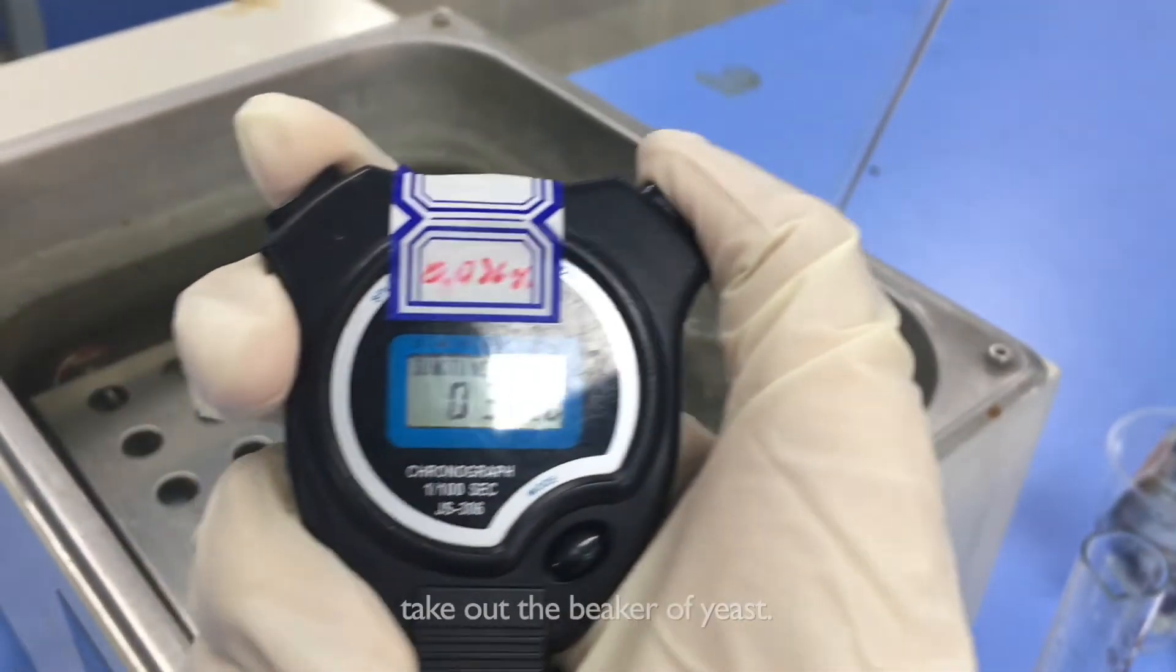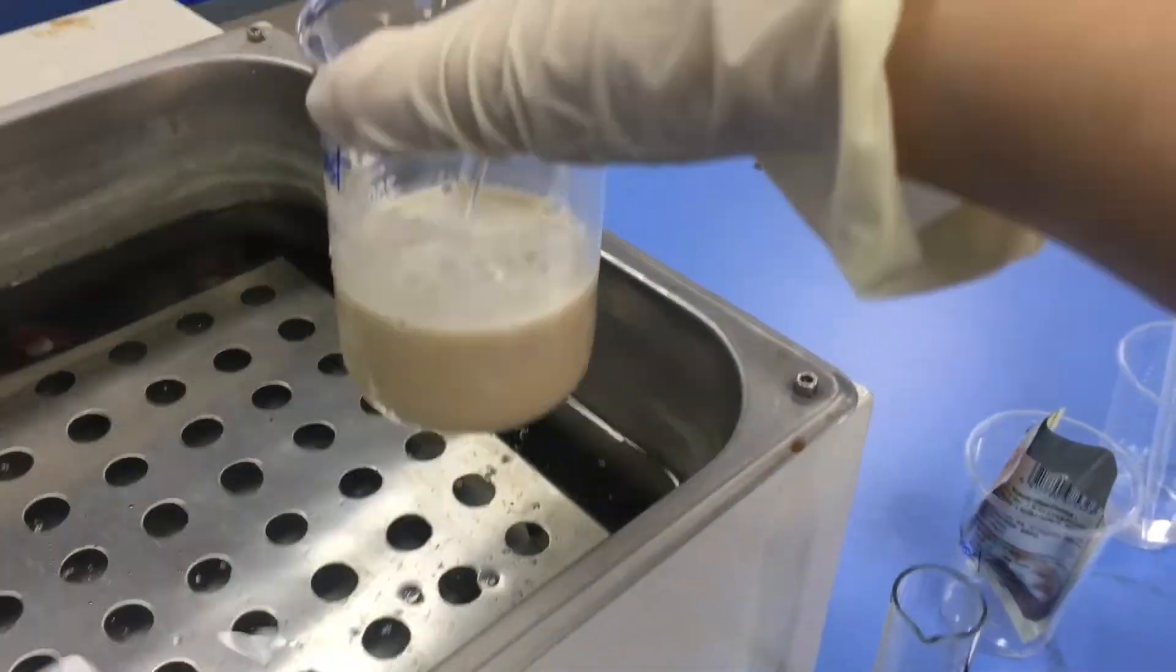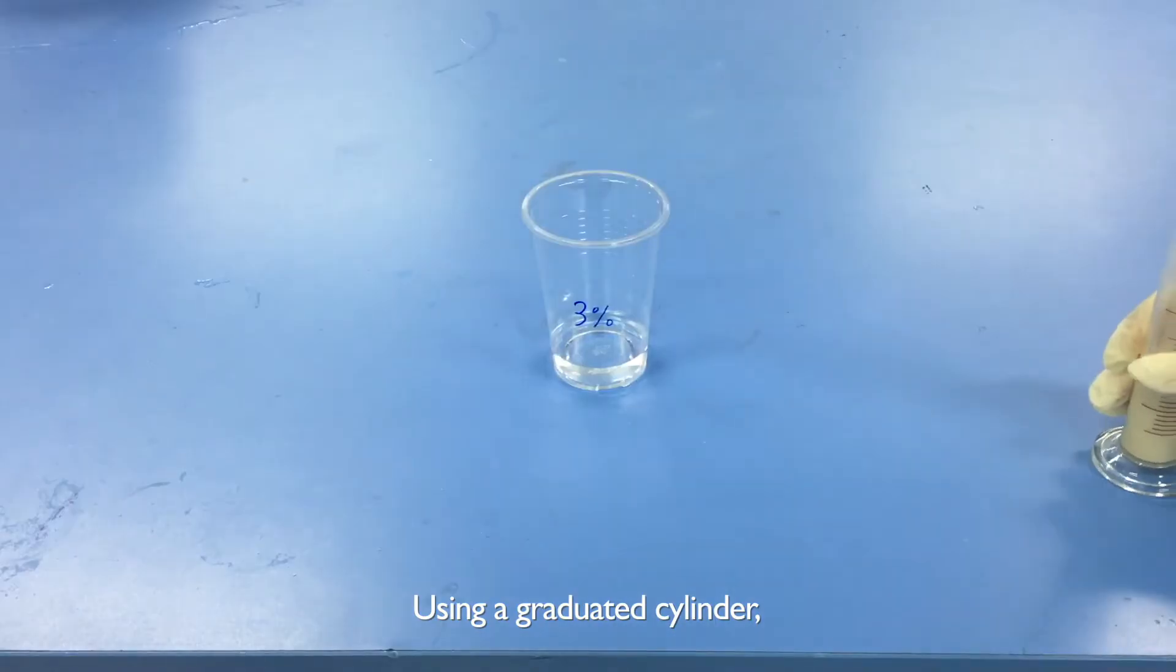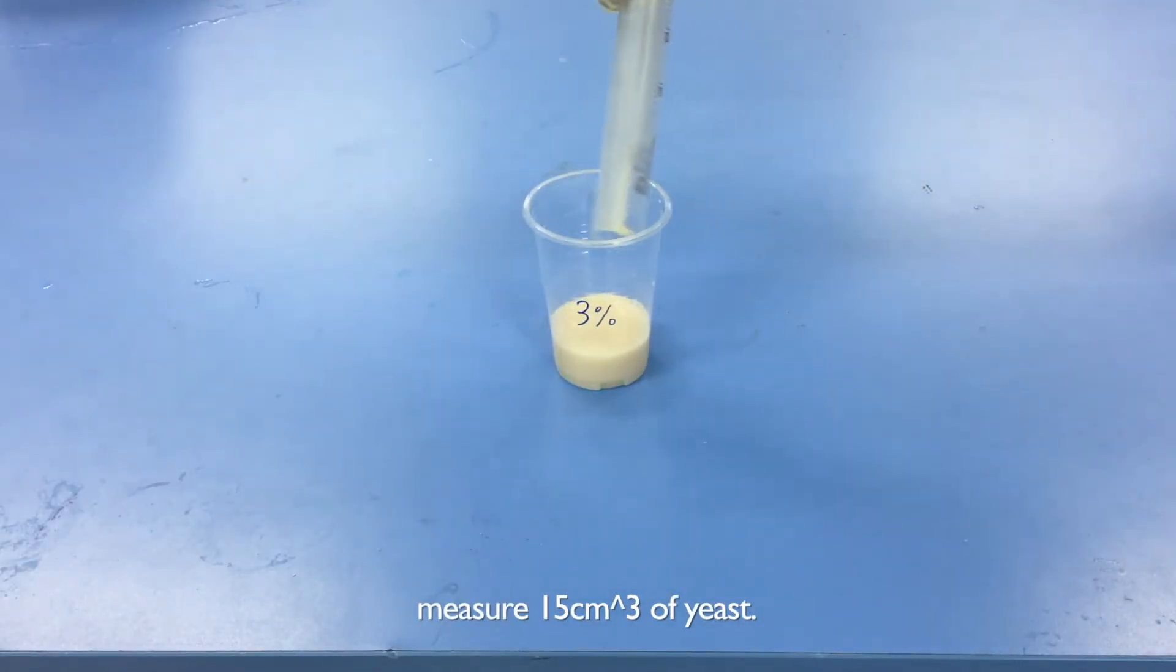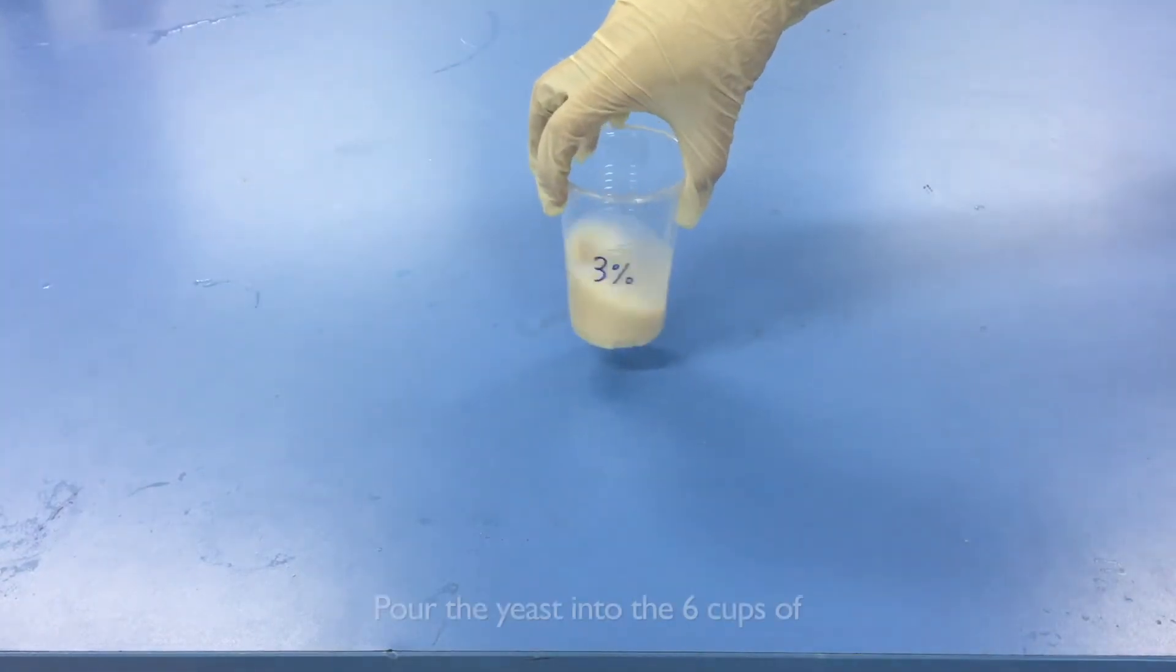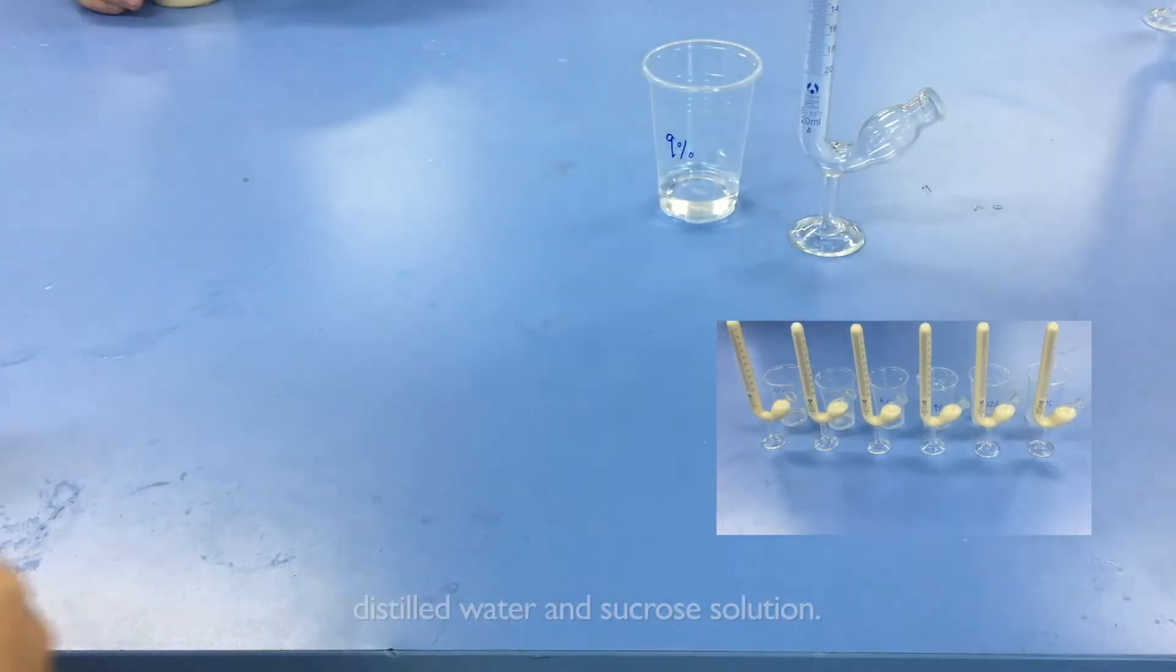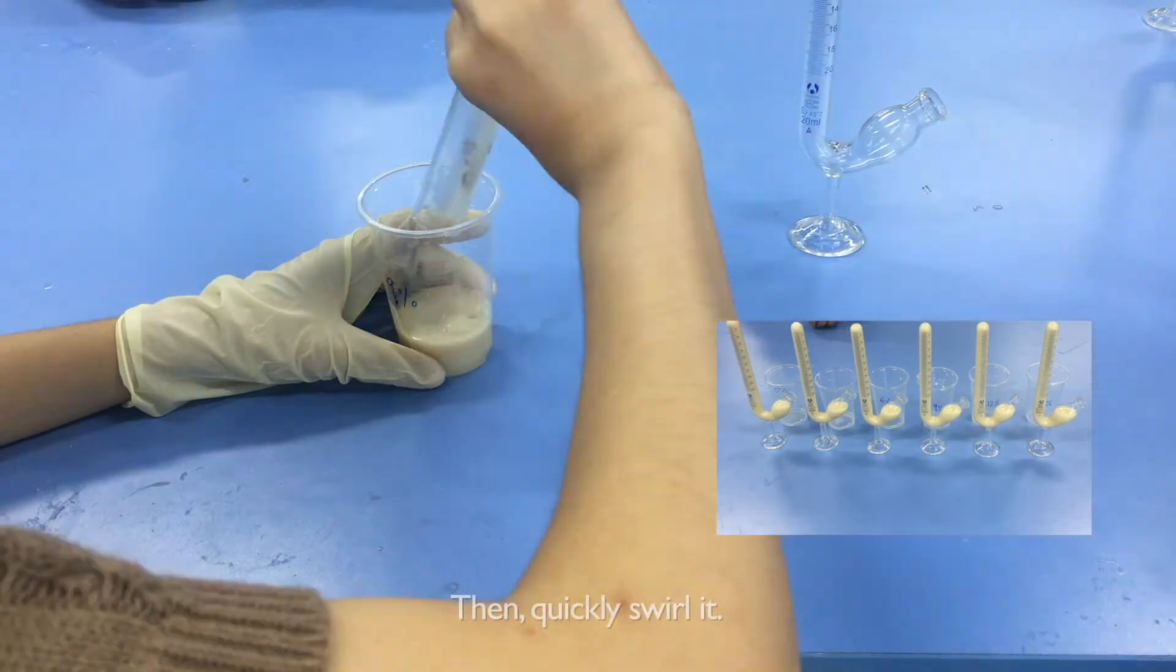When 30 minutes has passed, take out the beaker of yeast. Using a graduated cylinder, measure 15 cubic centimeters of yeast. Pour the yeast into the 6 cups of distilled water and sucrose solution and quickly swirl it.